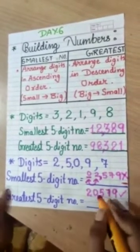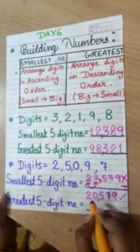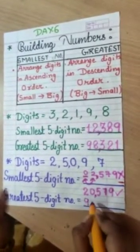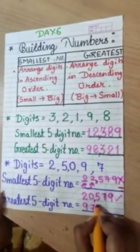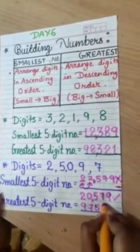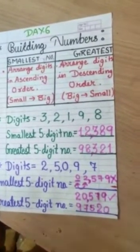Now, let's make the greatest 5 digit number. 9, the biggest one, 9, 7, 5, 2 and the smallest one, 0.